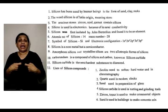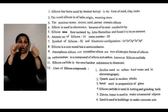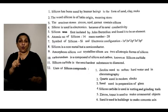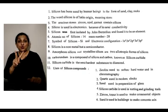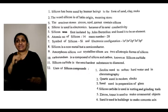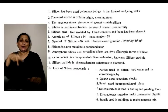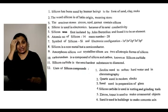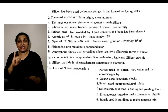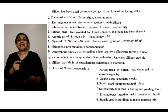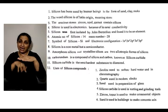The electronic configuration of silicon is 1s², 2s², 2p⁶, 3s², 3p². Please remember the electronic configuration. Silicon is not a metal but a semiconductor.